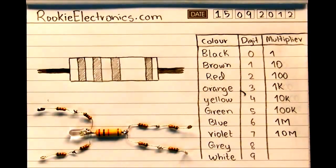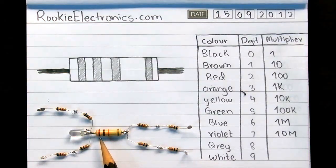There are 4-band color code resistors and 5-band color code resistors. The resistor right here in the rookie band is 4-band.